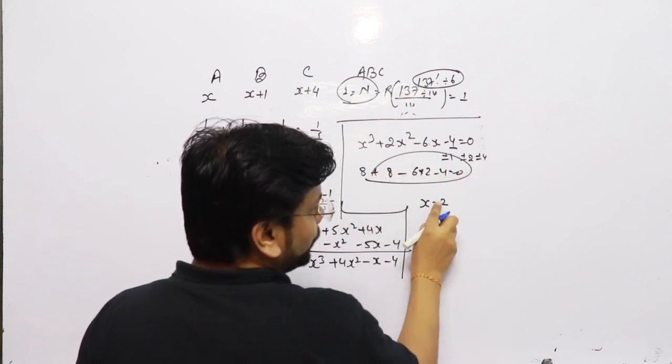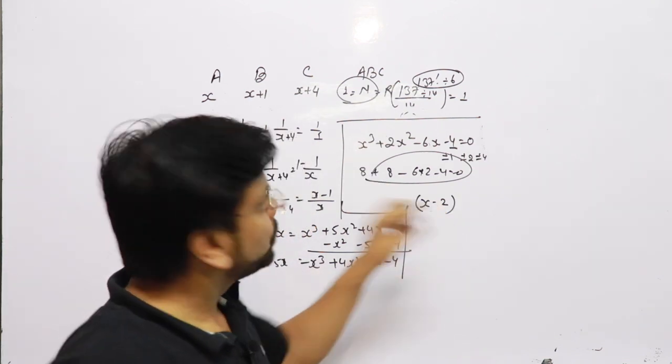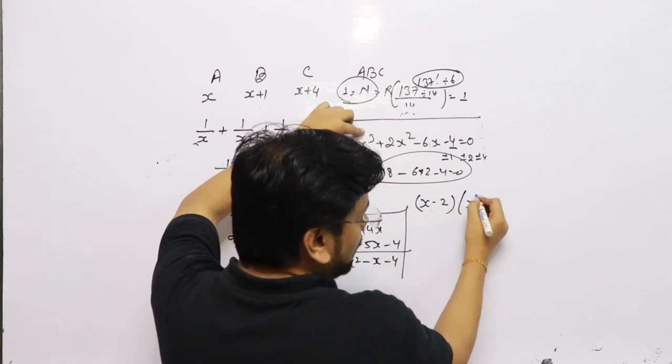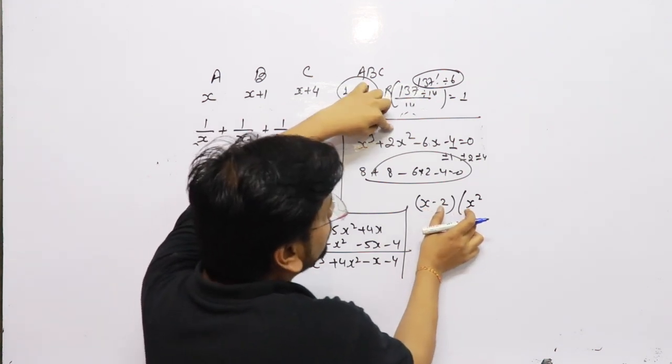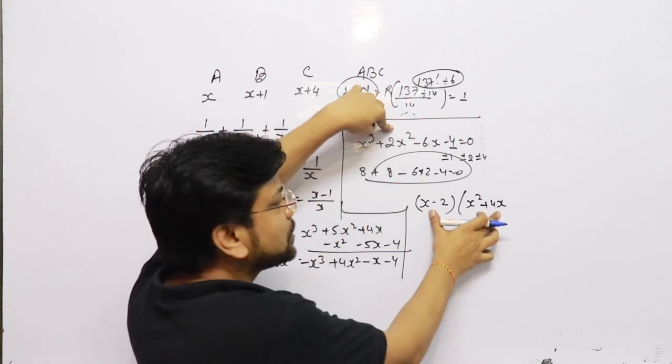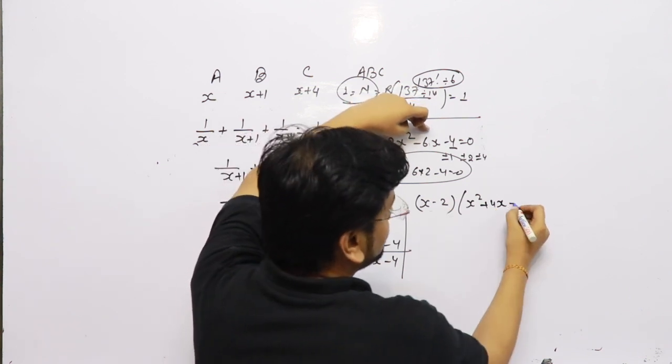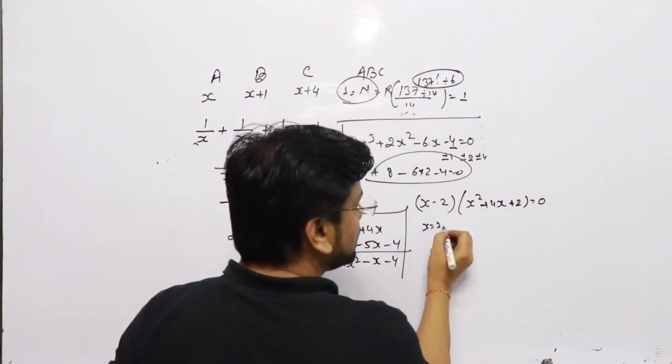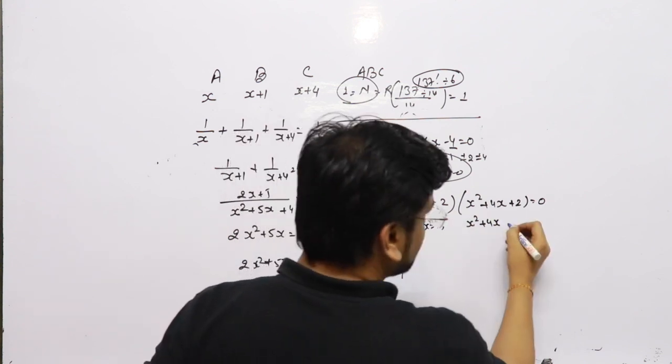x-2 is a factor. Let's factorize. We have x³ so x² will be there. We got x³-2x², and here +2x² to +4x² will be there. So this is +4x². Now we have -8x. I am looking for -6x, so we have +2 = 0. From here we can say x=2 and x²+4x+2 = 0.